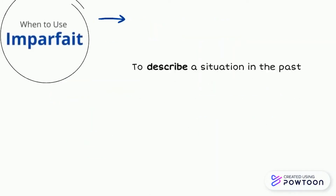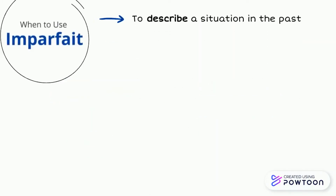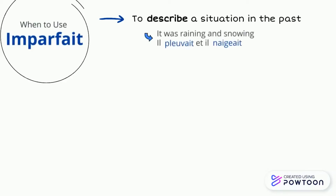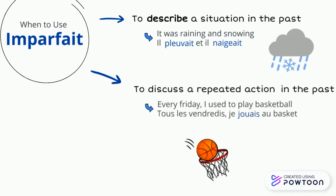But when do we use imparfait? Well, to describe a situation in the past — for example, it was raining and snowing, which would be il pluvait et il neigeait. Or, to discuss a repeated action in the past — every Friday I used to play basketball: tous les vendredis, je jouais au basket.